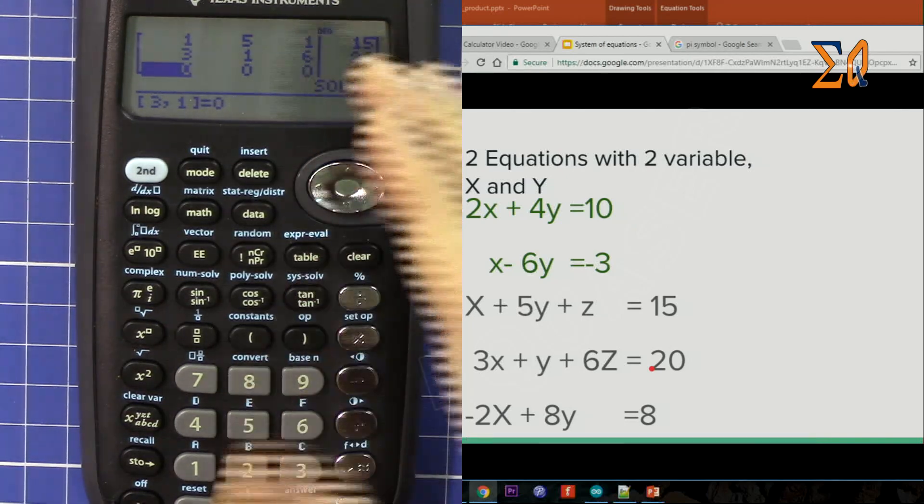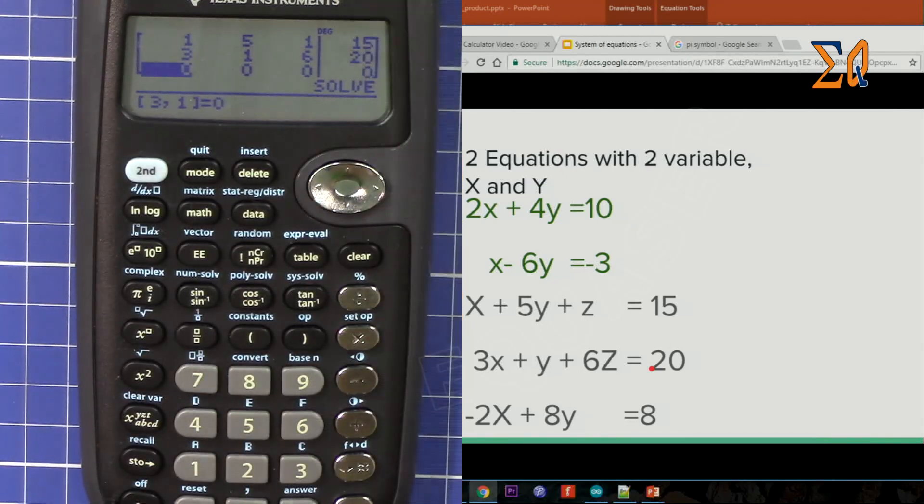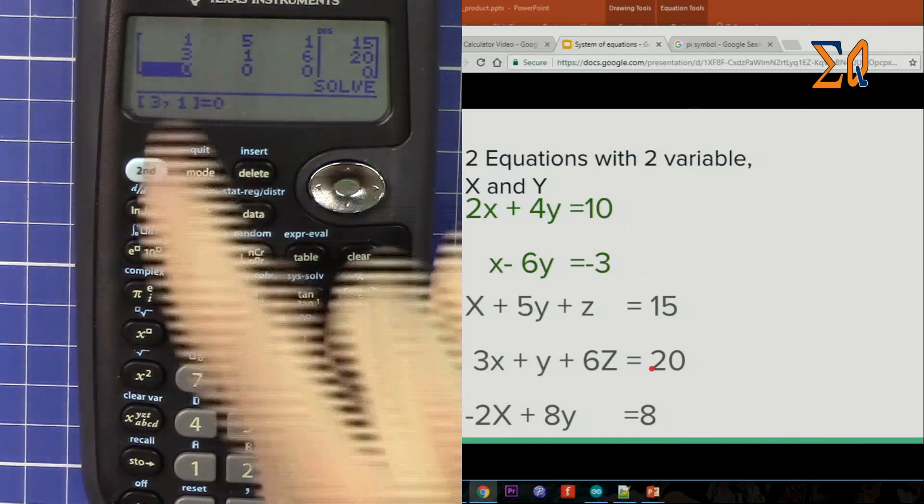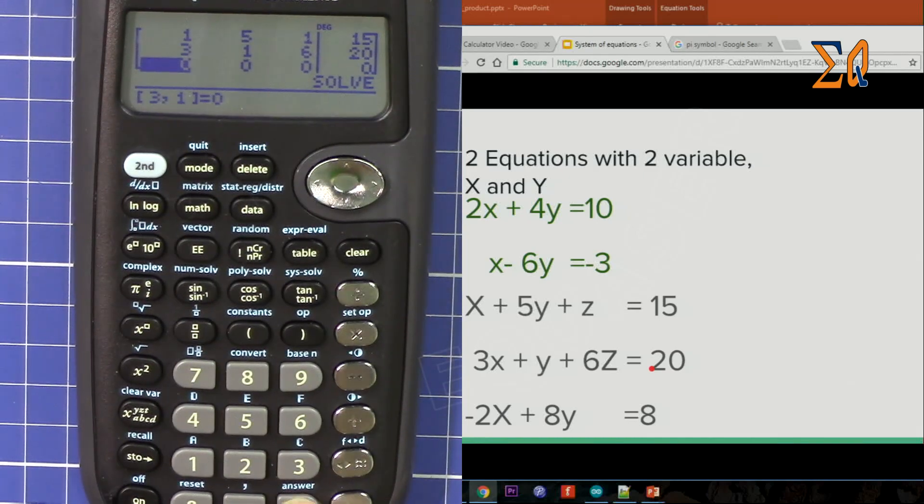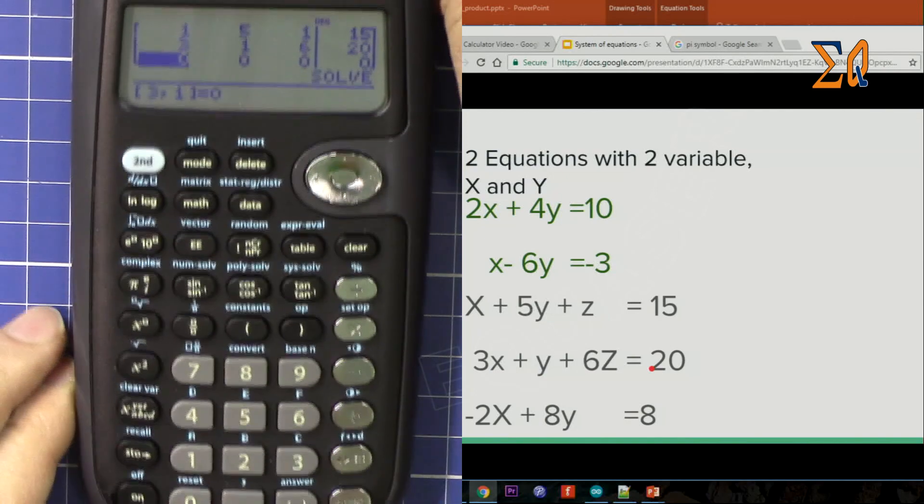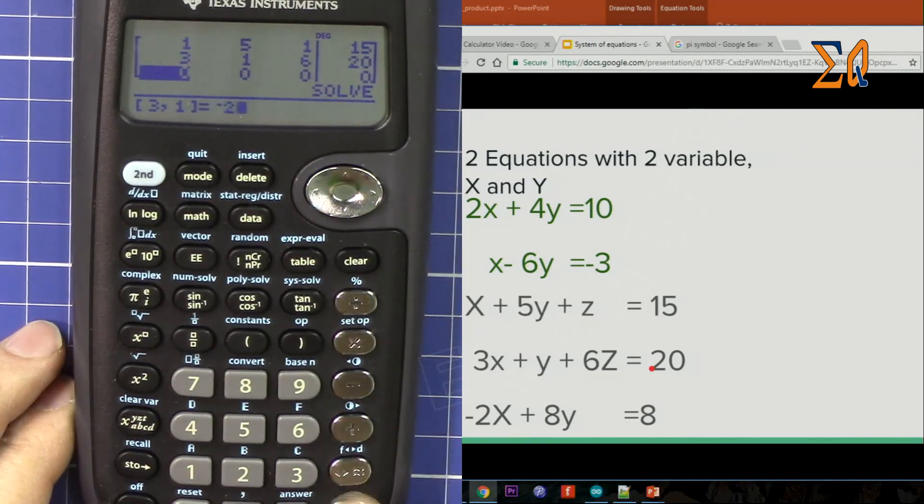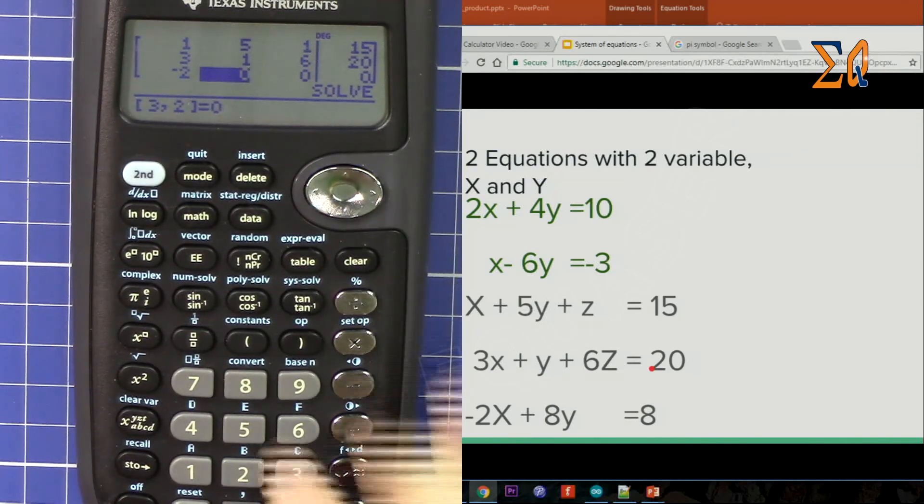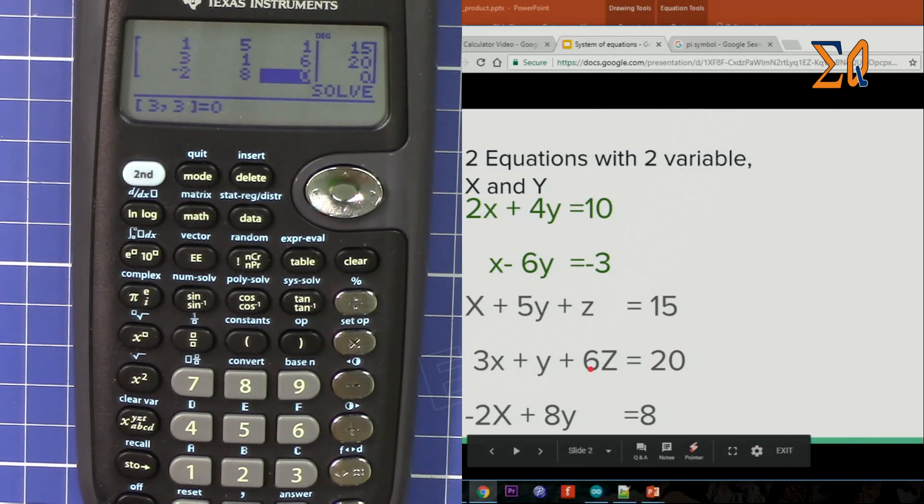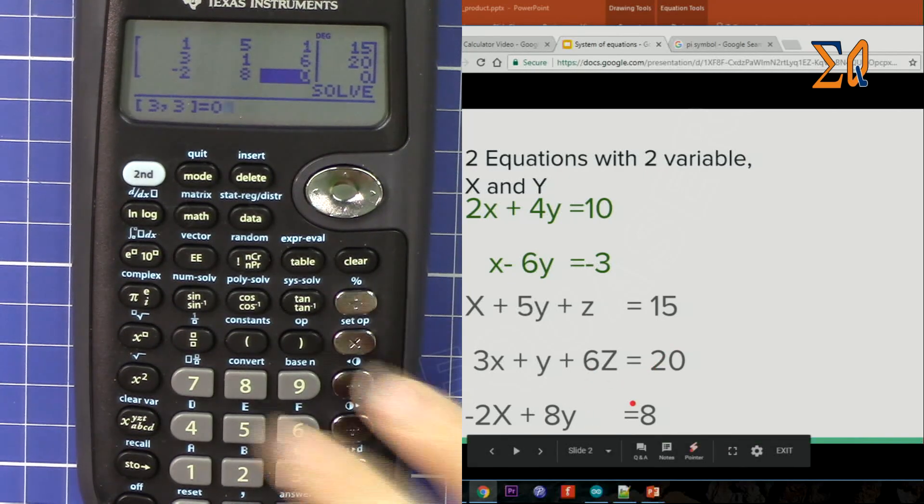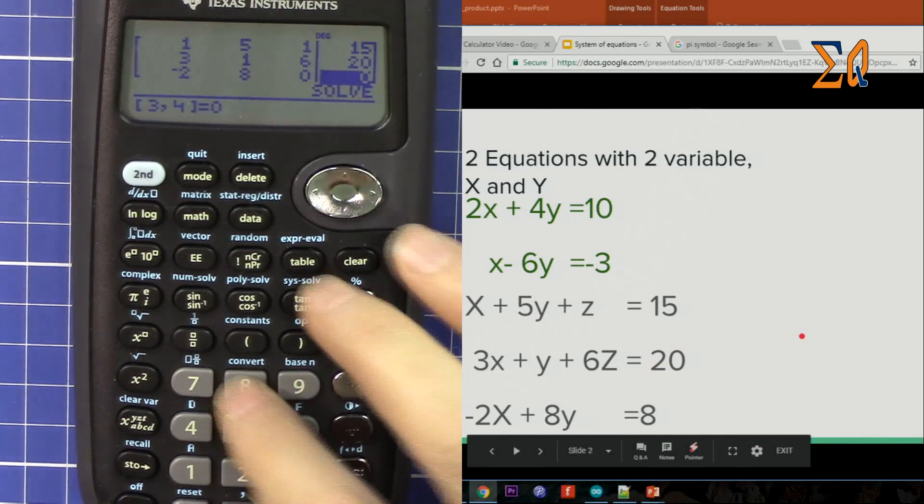Now minus 2. I'm pressing again this minus and then 8. Here we don't have anything for z, so that is 0. And on the right side, 8. All the values have been entered.